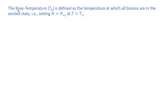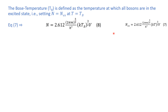The Bose temperature is the temperature at which all bosons are in the excited state. It is the critical temperature above which the material exists in the normal state and below which it starts converting into the Bose-Einstein condensate. At the Bose temperature Tb, the total number of particles N equals the excited number N_ex. Substituting T = Tb into equation number 7 gives the total number of particles as equation number 8.